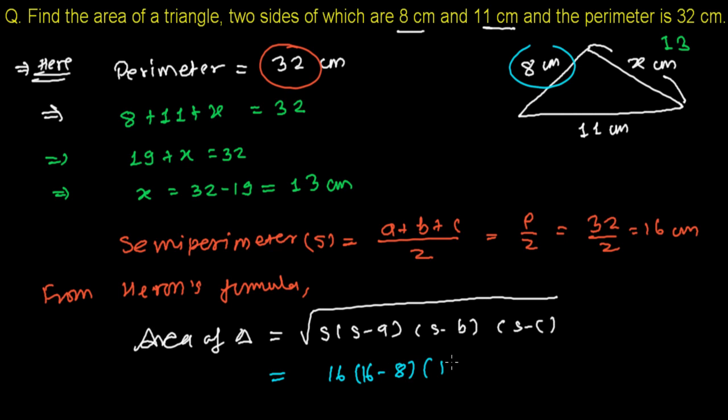So this is the square root of 16 times 16 minus 8, and then again 16 minus the second side, 11, and third side, 16 minus the third side which we had got as 13. And these all are inside the root.